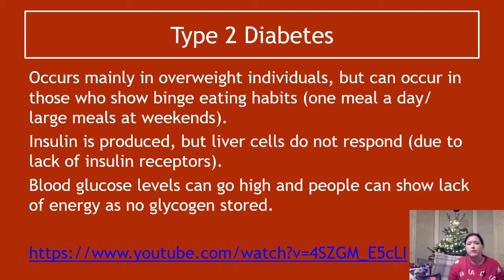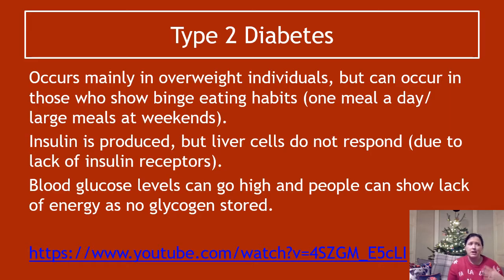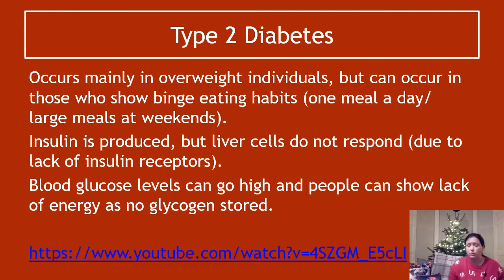Type two diabetes occurs mainly in overweight individuals, but it can occur in people who show binge eating habits who might be of normal or underweight — things like one meal a day, large meals at weekends, huge amounts of sugar at the weekend. This is when insulin is produced, but the liver cells do not respond, usually due to lack of insulin receptors. That's one big difference: type one, no insulin at all; type two, yes insulin, but the body's not responding to it.